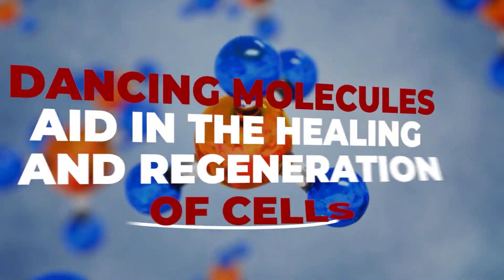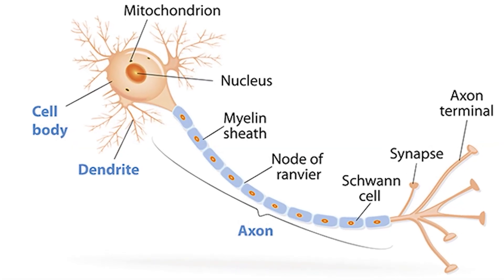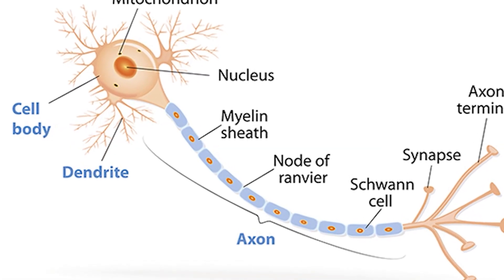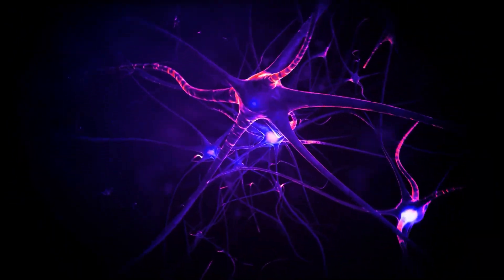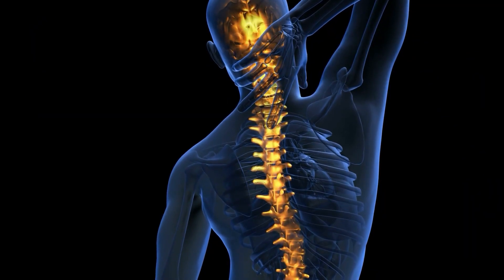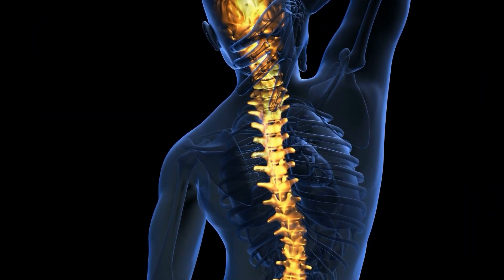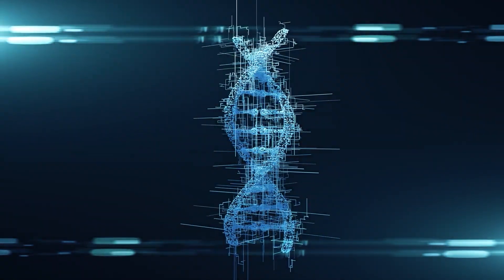Dancing molecules aid in the healing and regeneration of cells. Axons, which are the long tails of neurons that convey electrical impulses directing the body to feel or move, can be damaged or severed by a spinal cord injury. Scar tissue forms after an injury, limiting axon regeneration, which is why people become chronically paralyzed.